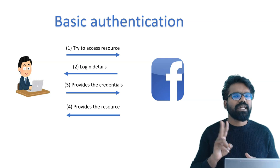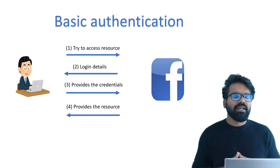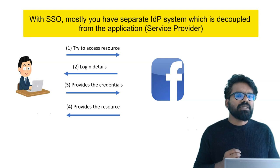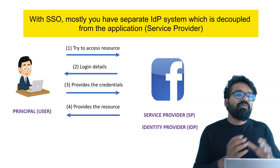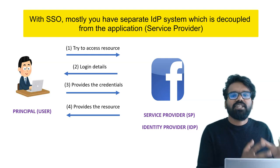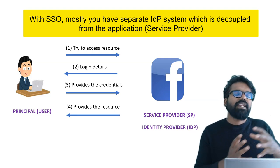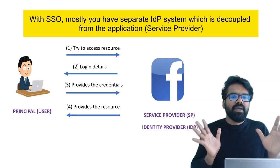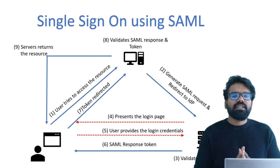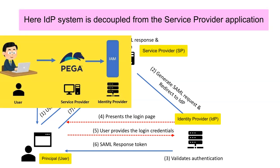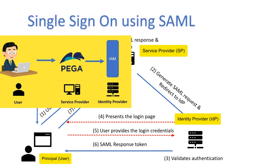So what are the participants here? There are two direct participants: one is me as the end user, and two is Facebook as the application. In SAML, participants are referred to by different terms. The user can be called the principal, and Facebook is the service provider because I wanted to access its resource. In the single sign-on flow, there are three participants: the principal or user, the service provider, and the identity provider — which you can think of as your Active Directory.